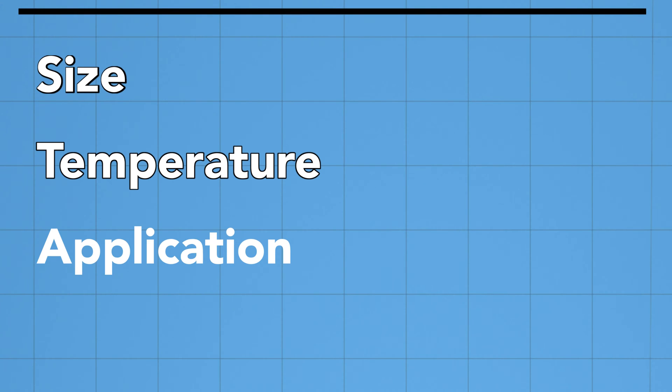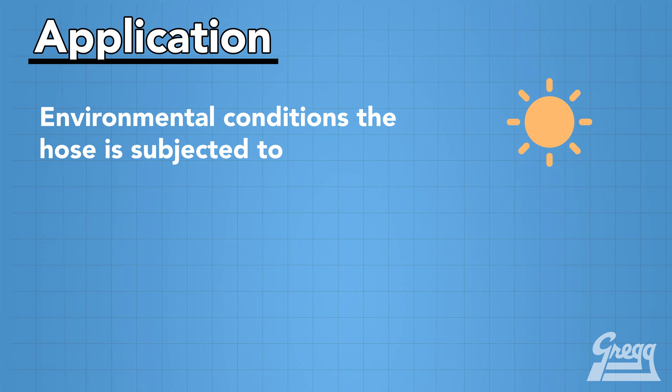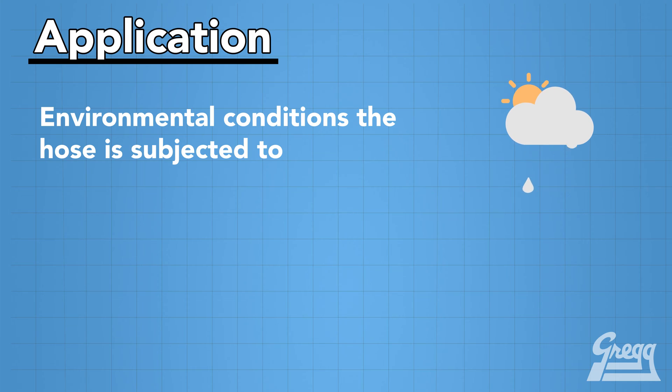A stands for application. This mostly refers to the environmental conditions in which the hose will be exposed to. It could be indoor or outdoor applications, and you need to consider abrasion risks.